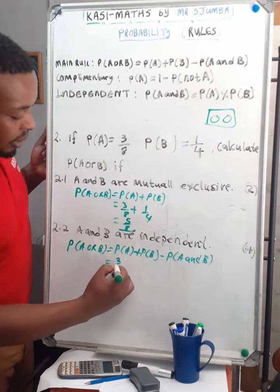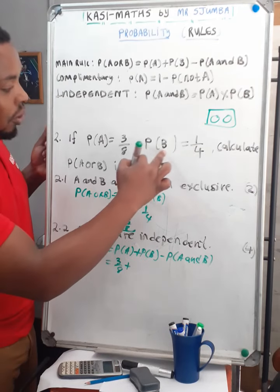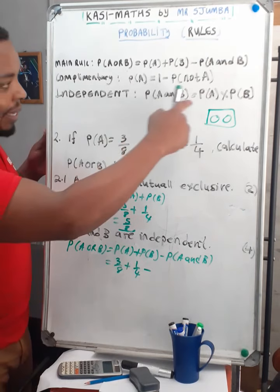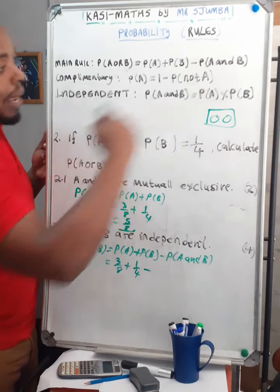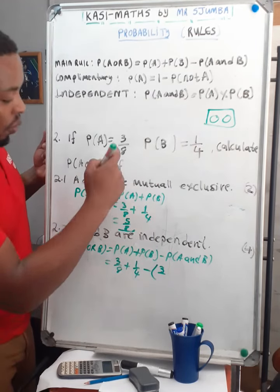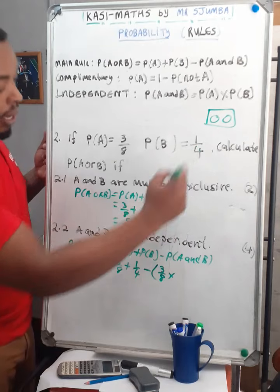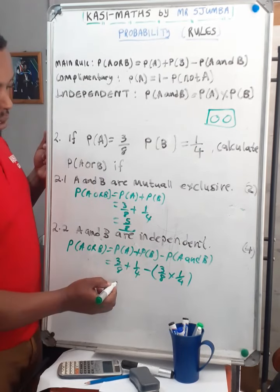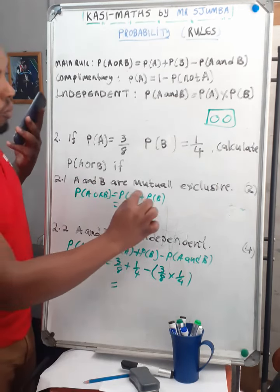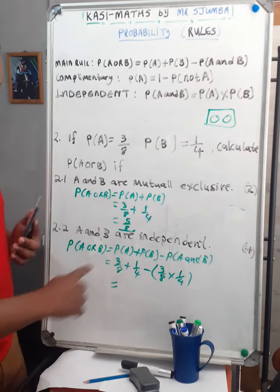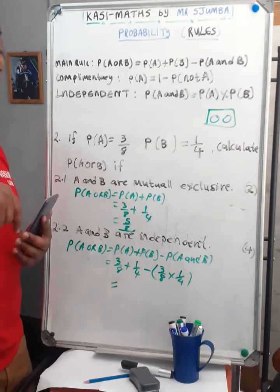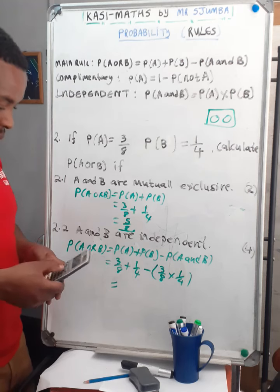Probability of A is 3 over 8, plus probability of B which is 1 over 4, minus the probability of A and B. Since they are independent, we are allowed to multiply, so probability of A and B equals 3 over 8 multiplied by 1 over 4.